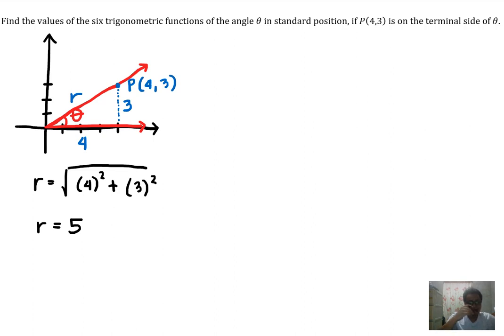So now we have the values of X, Y, and R. X is 4, Y is 3. So we can actually compute for the six trigonometric functions of the angle theta. Sine of theta is Y over R. So Y is 3, R is 5, so 3 over 5.